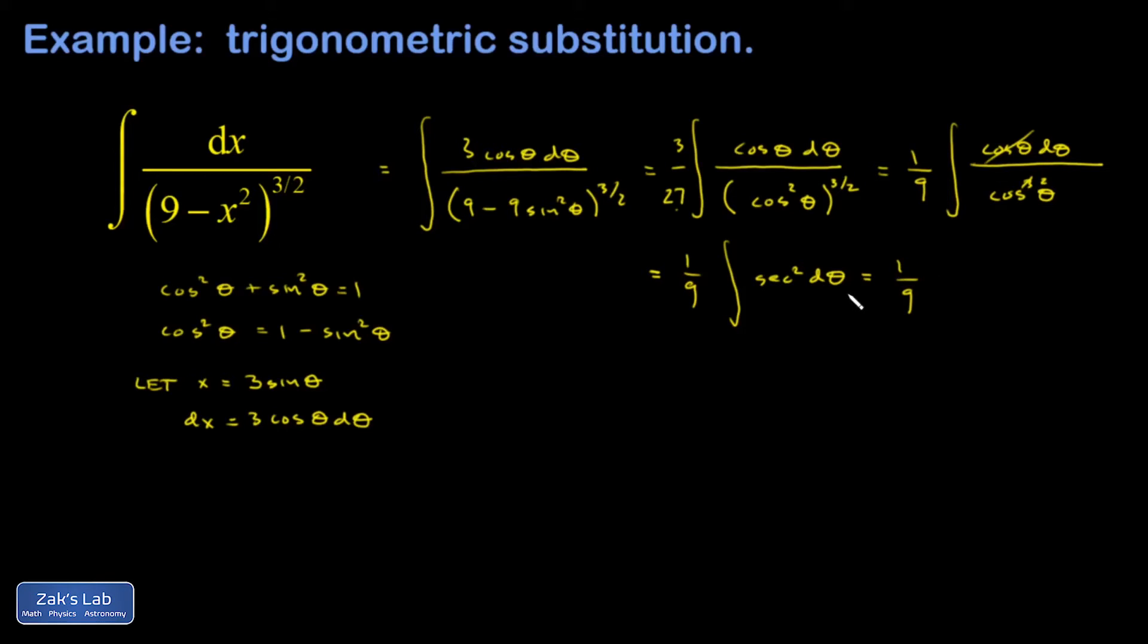But the secant function is 1 over cosine. So I have secant squared d theta. This is now guessable. The thing I differentiate to get secant squared is the tangent function.